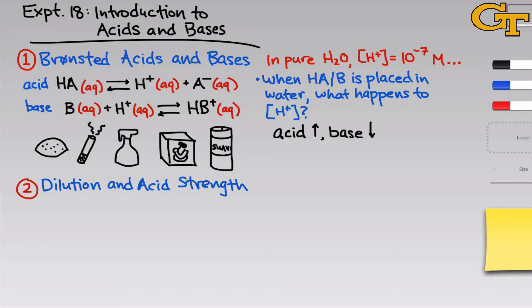In the second part of this experiment, we'll explore the relationship between acid strength and pH and investigate how dilution affects pH. Before getting into the details of dilution, let's talk about strong versus weak acids. A strong acid is one that completely dissociates in water. Hydrochloric acid, or HCl, is a great example.